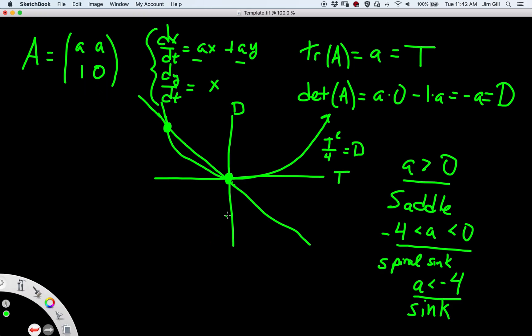Now, if you're doing experiments and you estimate your A is about 2, then you know definitely you're going to have a saddle behavior. If you estimate your A is about negative 2, you know you're going to have a spiral sink. And if you estimate your A is about negative 8, you know you're going to have a sink. That's going to be the type of situation that your system is going to evolve over time with.